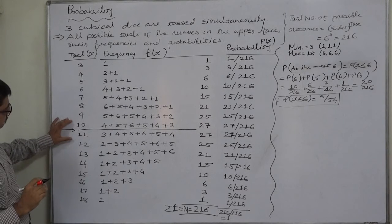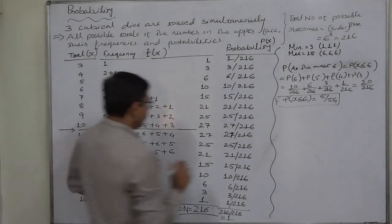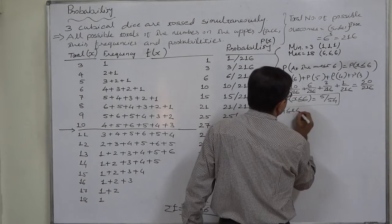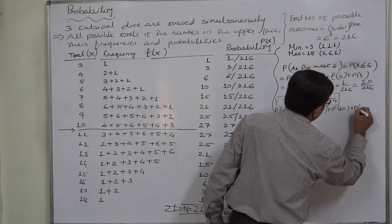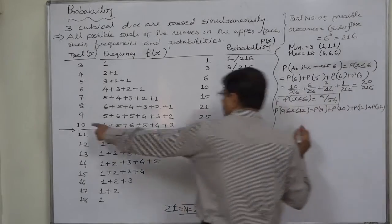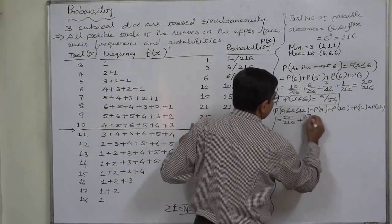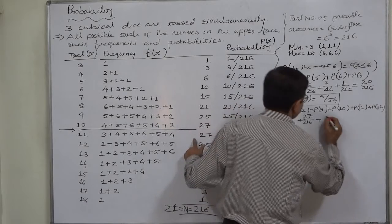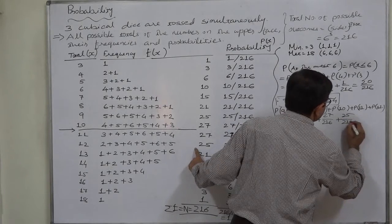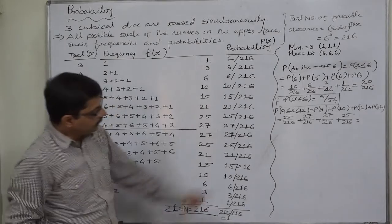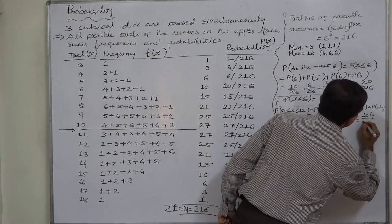Let us take the case where total comes between 9 and 12, that is P(9 ≤ X ≤ 12). It will be P(9) plus P(10) plus P(11) plus P(12), which is 25/216 plus 27/216 plus 27/216 plus 25/216. Twenty-seven plus 27 is 54 and 25 plus 25 is 50, so it comes to 104/216.